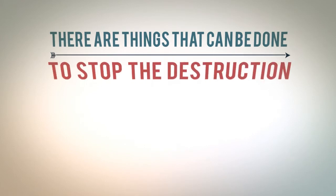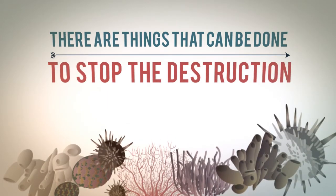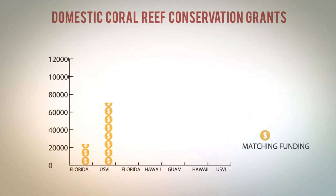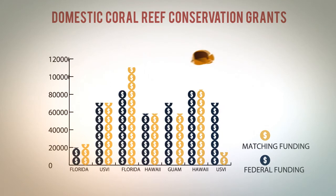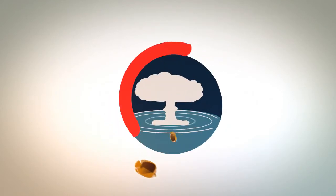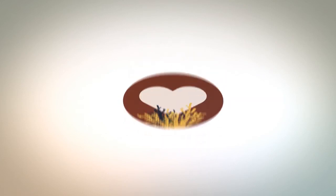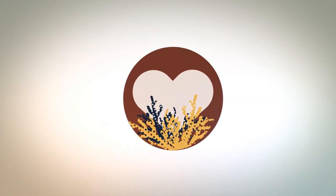But there are things that can be done to stop the destruction. People can apply for grants to spend on conserving the coral. Last year, millions of dollars were awarded to help save the coral all over the planet. And while there are still many conservation groups working to save the reef, anyone can help by being careful not to litter and pollute, being more aware when visiting reefs, or even adopting a reef.